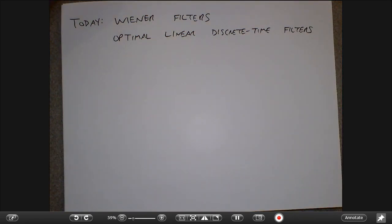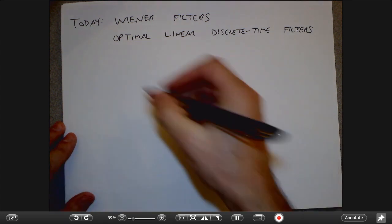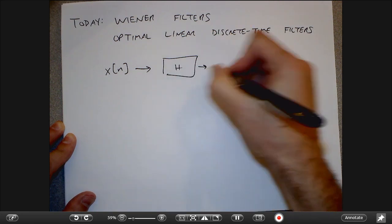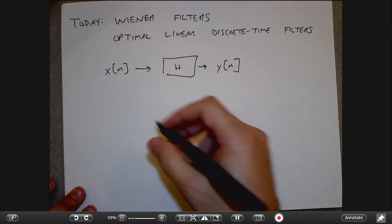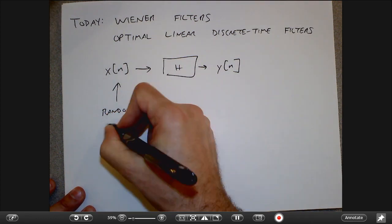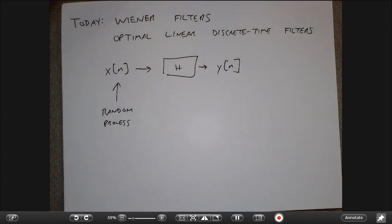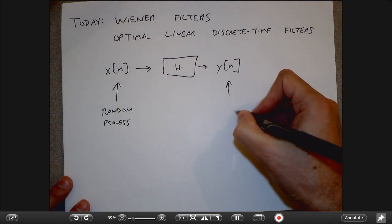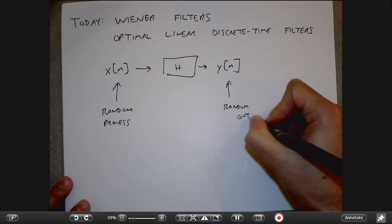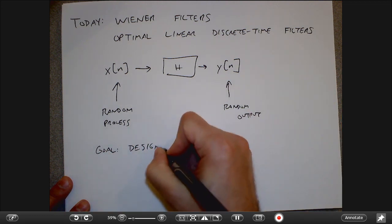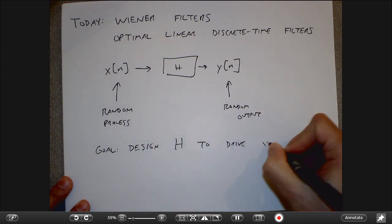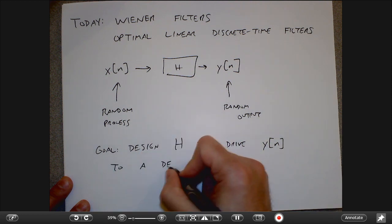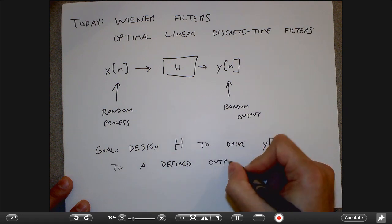What do I mean by optimal? I want to design a filter that does as well as possible at a certain job. Here's a filtering situation: we're going to treat the input as some sort of random process, meaning I don't know exactly what's coming in. I have maybe a model for it, but there may be noise, so the output is also a random thing.